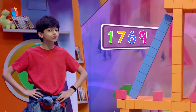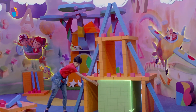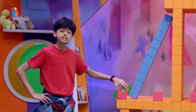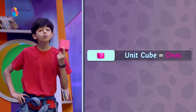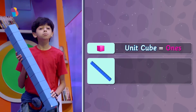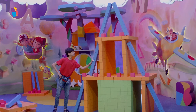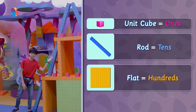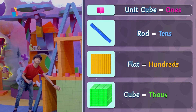Do you want to know how I counted so fast? I'll tell you. It's all thanks to this big cube, flats, rods and unit cubes. See this small cube? It's called a unit cube. It represents the ones place. This blue rod is for the tens place. This flat is for the hundreds place. And this big cube is for the thousands place.